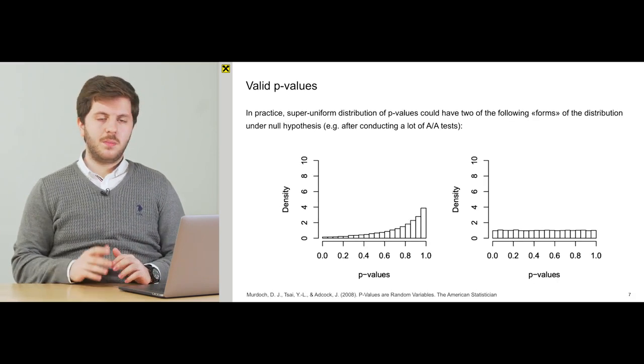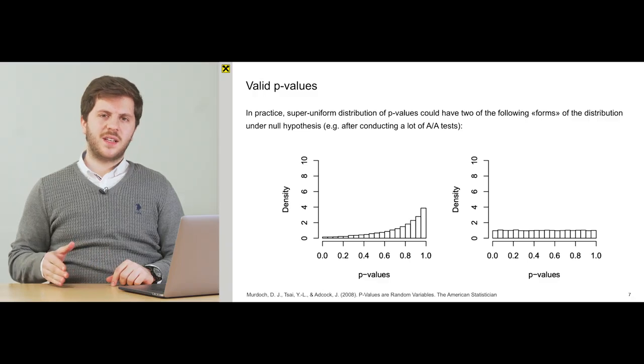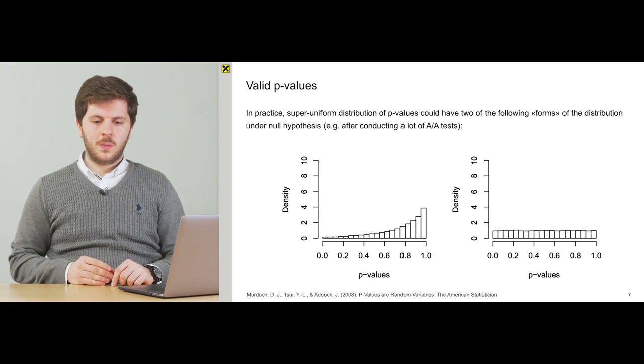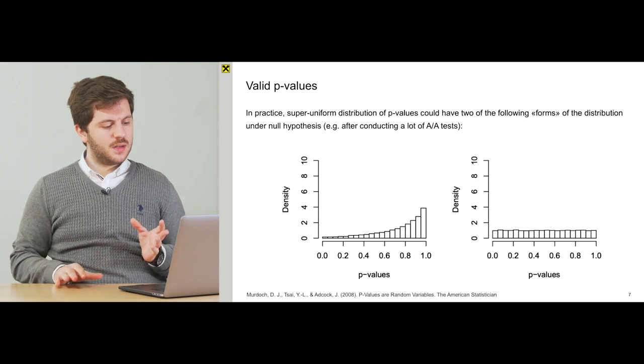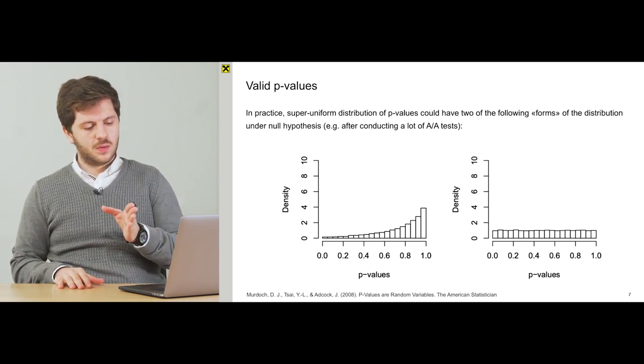And it could mean two things. The first one is that our distribution is right skewed, and the second one is that our distribution is uniform. So when you conduct a thousand of AA tests, you should see the distribution that is either right skewed or uniform.